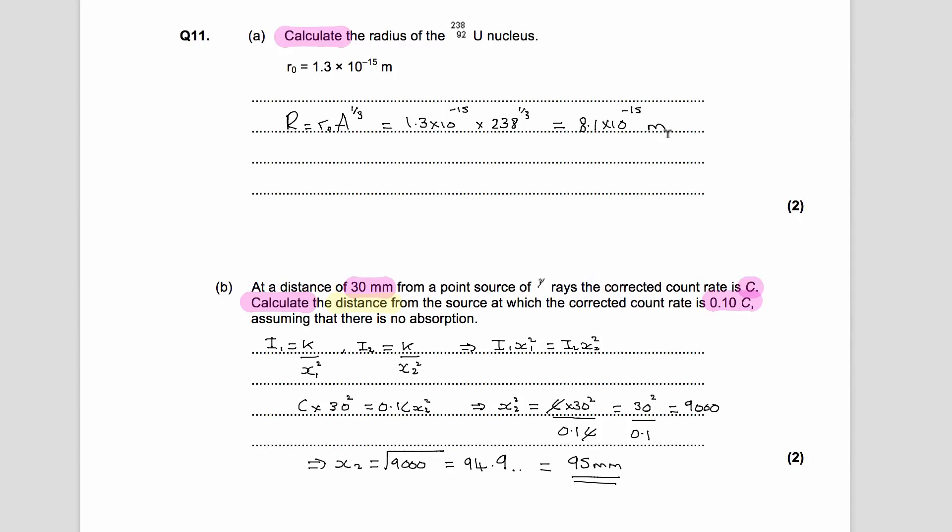Okay, so this is question number 11 of the nuclear physics homework booklet. In question number 11, we start off and we're asked to calculate the radius of this uranium nucleus, and we're told that R₀ is 1.3 times 10 to the minus 15 meters.